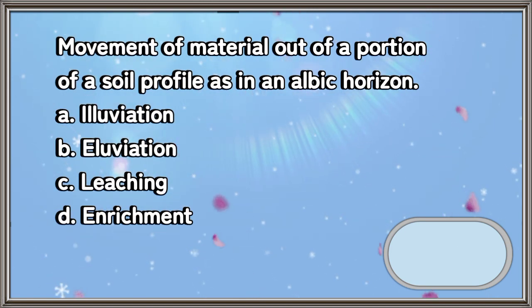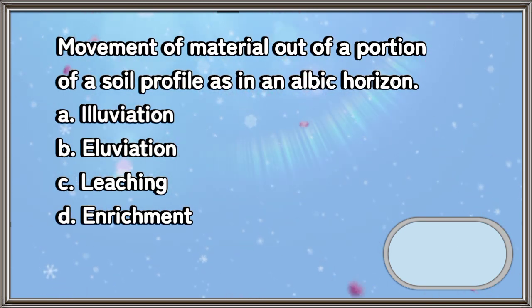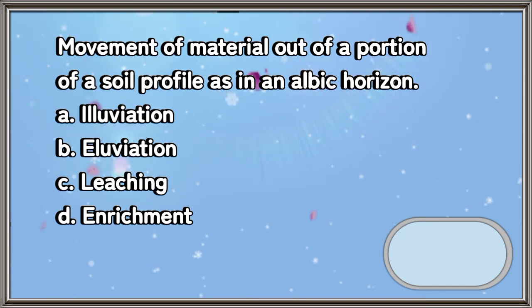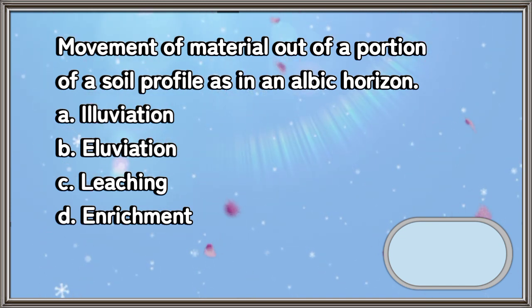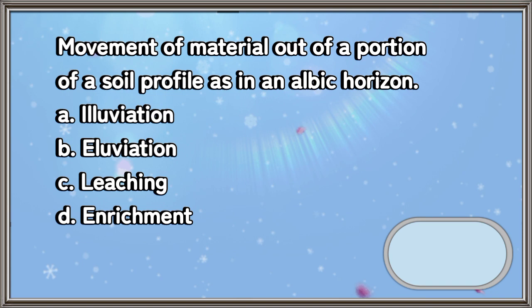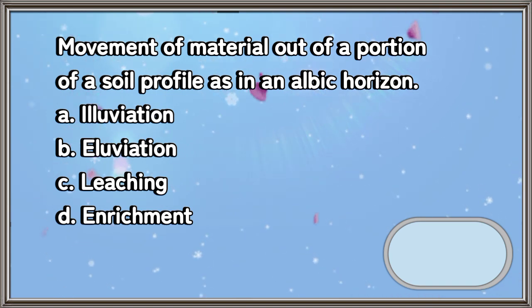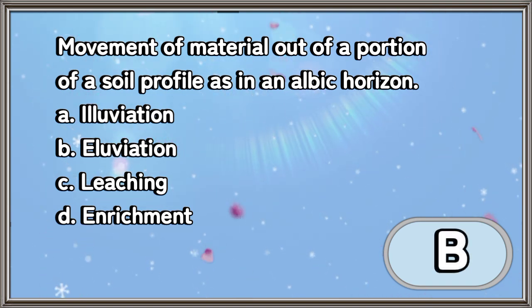Movement of material out of a portion of a soil profile, as in an albic horizon. A. Alluviation. B. Eluviation. C. Leaching. D. Enrichment. The answer is letter B.